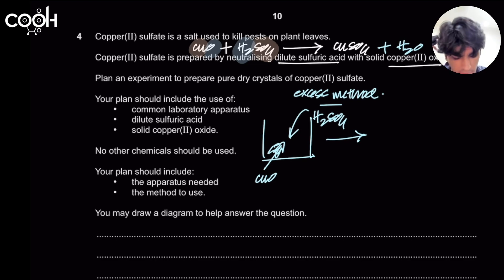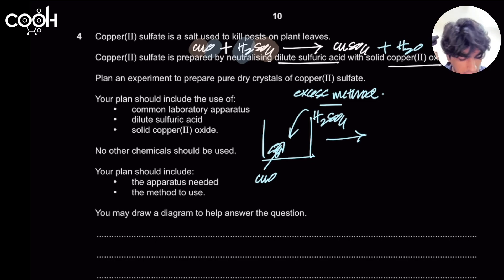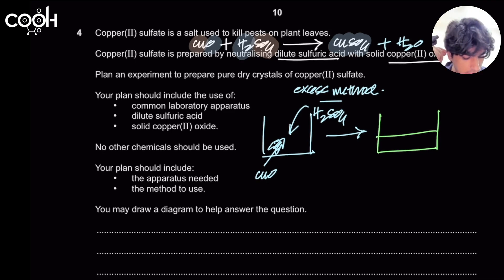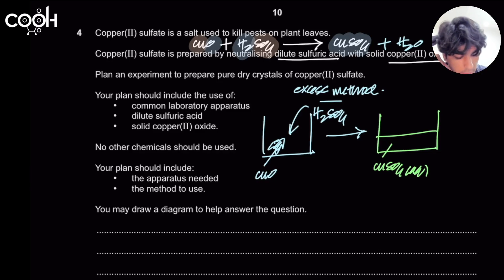Copper oxide is in excess so it can be easily removed through filtration. The H₂SO₄ is the limiting reagent and the copper oxide is in excess. They react together in a beaker, producing CuSO₄ aqueous solution. All the acid is used up because it was limiting, and you're left with excess copper oxide.